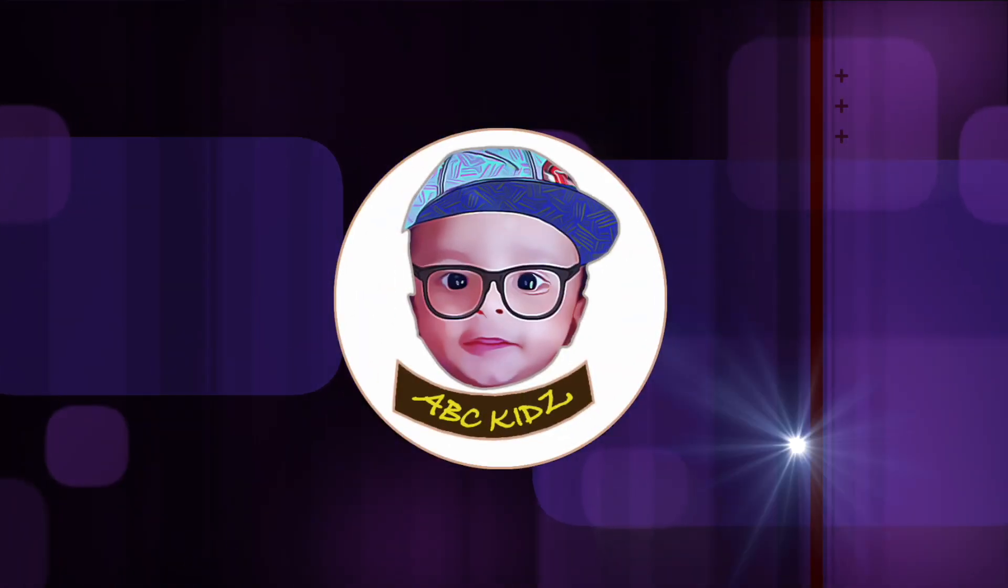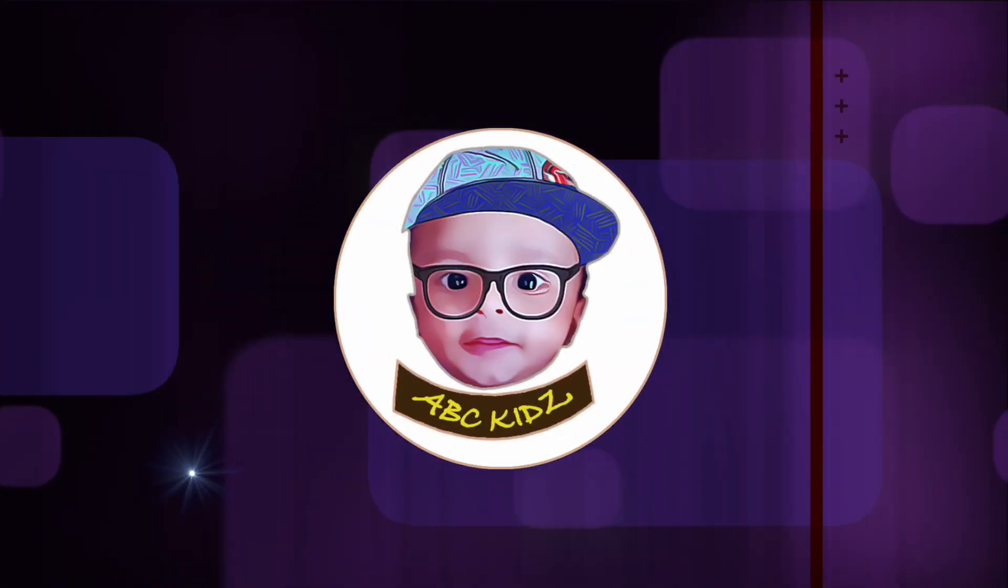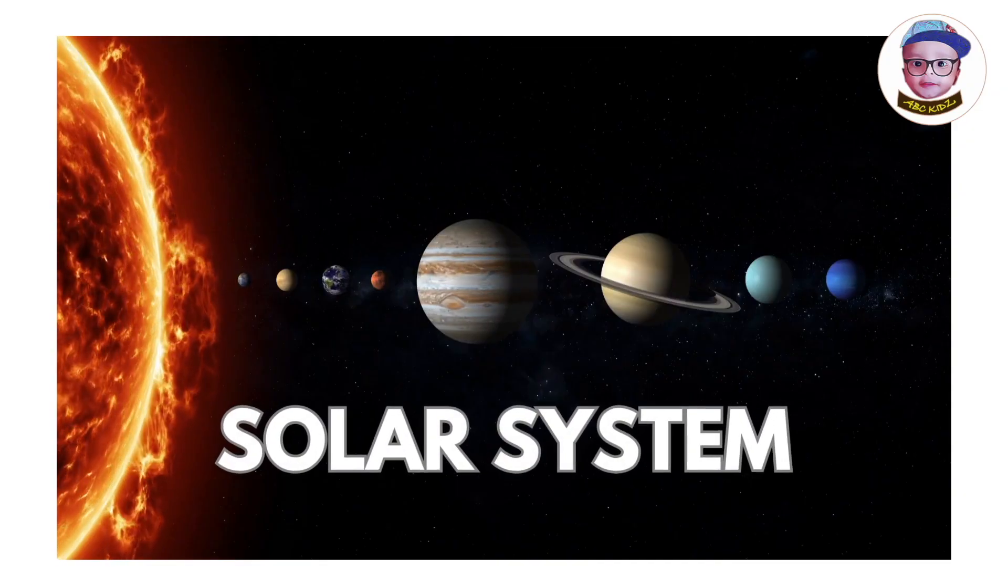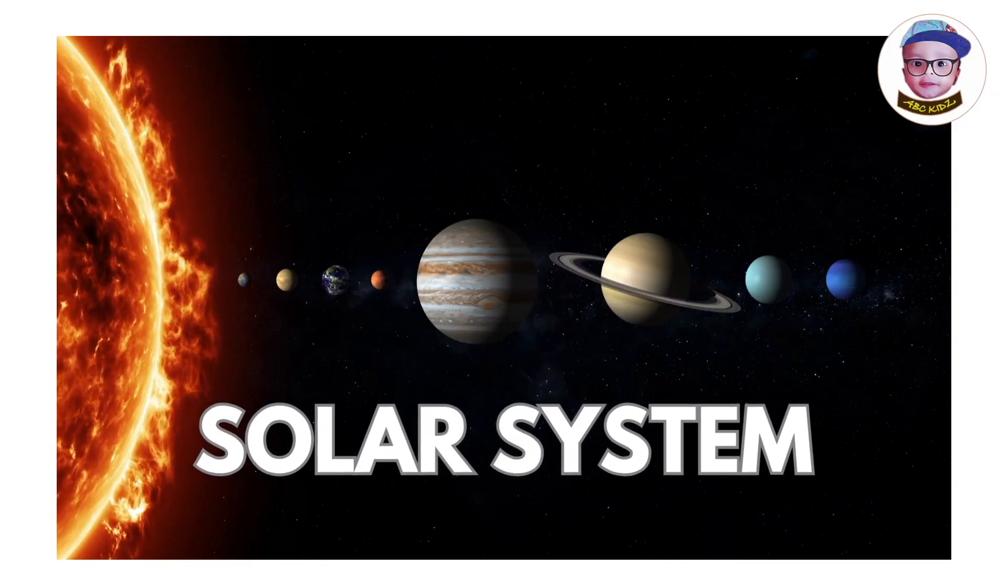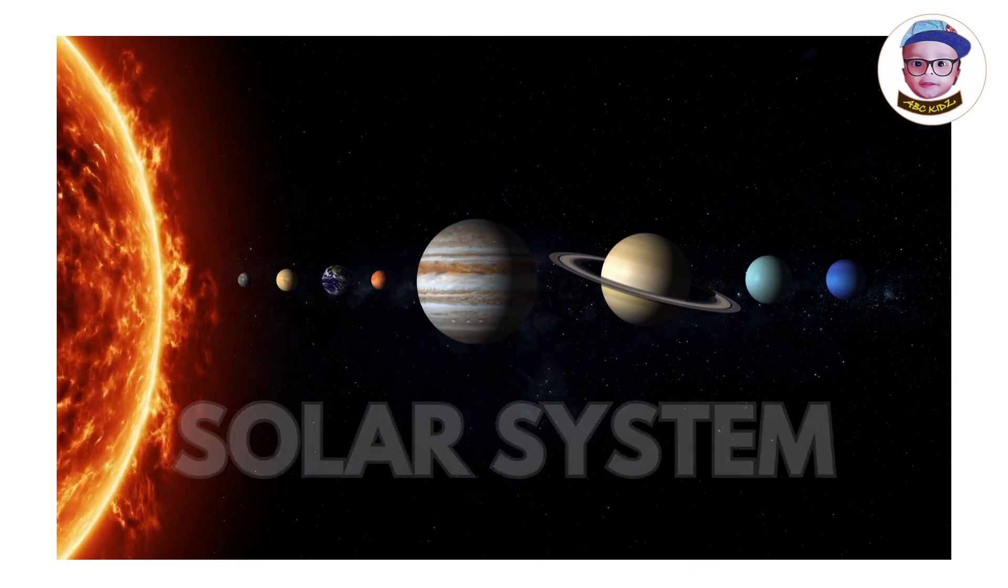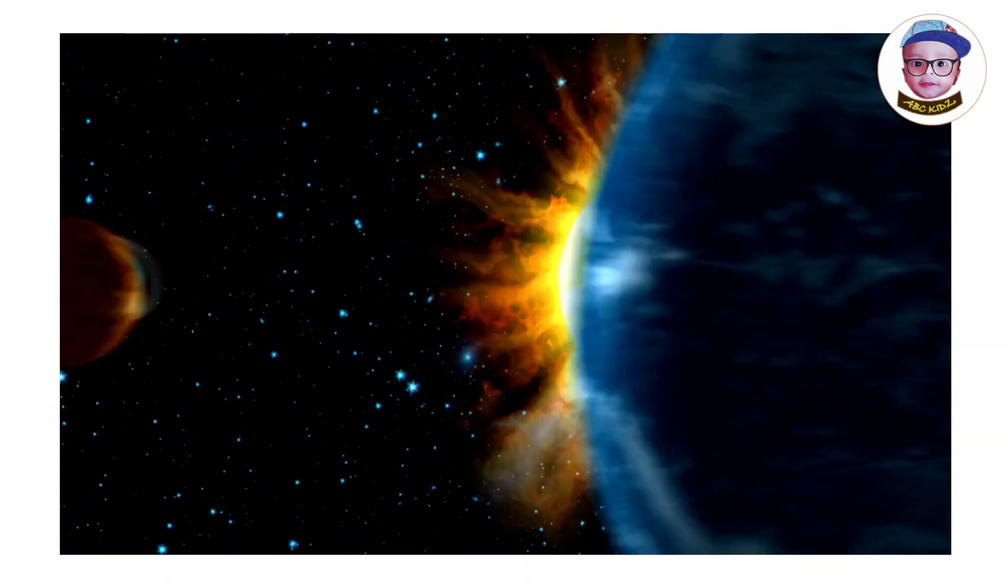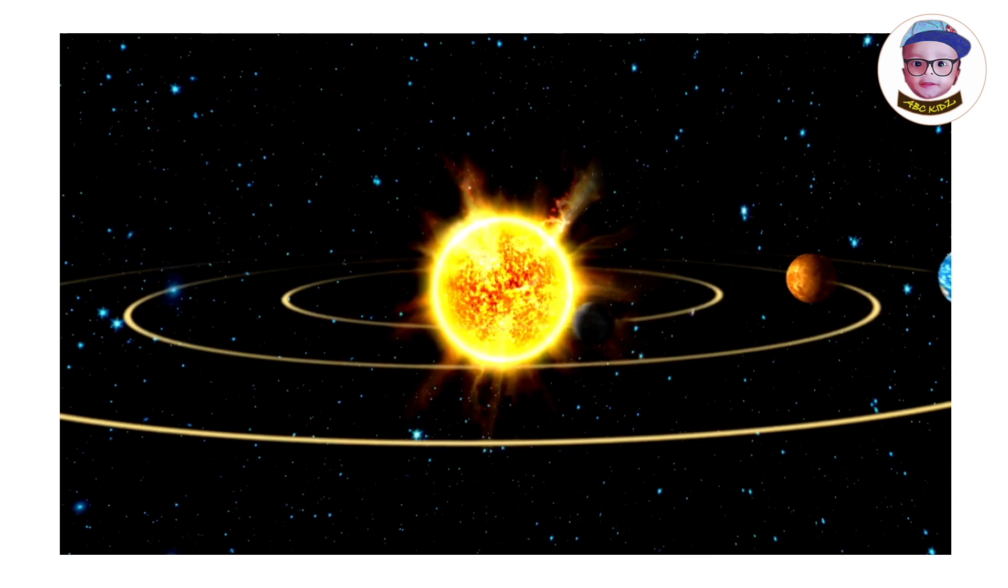Welcome to ABC Kids. Solar System. Our solar system consists of eight planets.